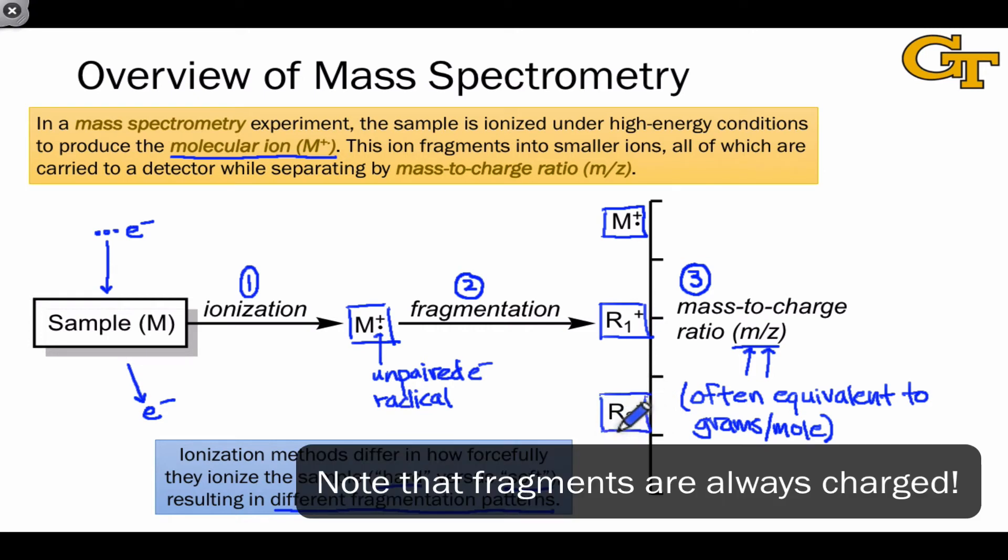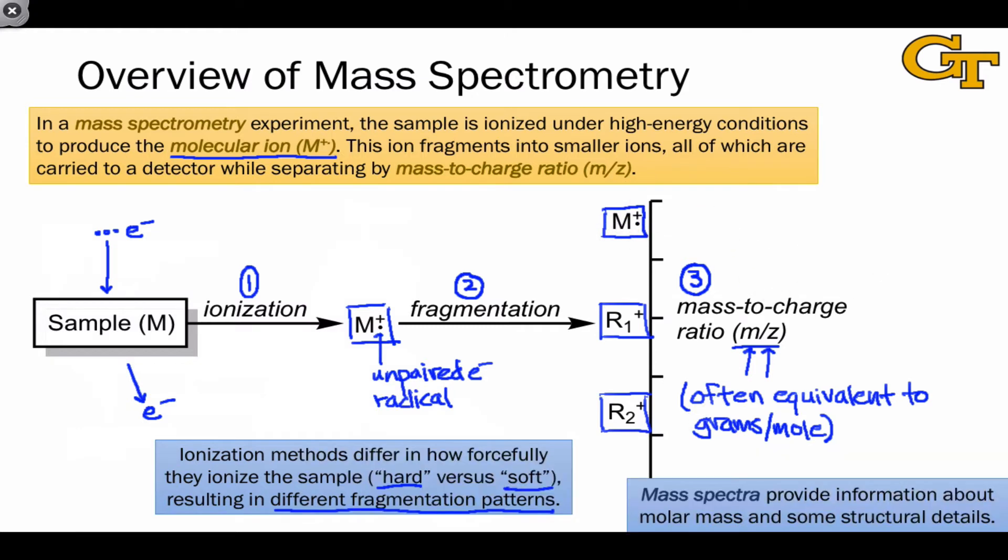And these may be cations with an even number of electrons, or may be radical cations themselves, like the molecular ion, as we'll see in future discussions of fragmentation. The y-axis in a mass spectrum is intensity, or the number of ions with that corresponding mass-to-charge ratio on the x-axis. Peak heights in mass spectrometry don't tell us a whole lot, except that an ion exists at that mass-to-charge ratio. And so generally, we're going to focus on the x-axis when analyzing mass spectra.